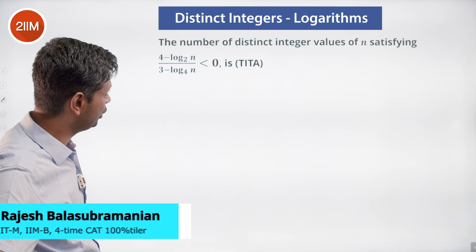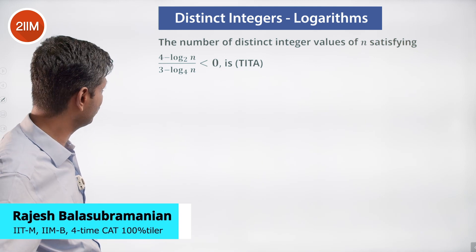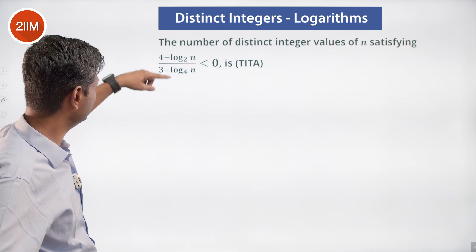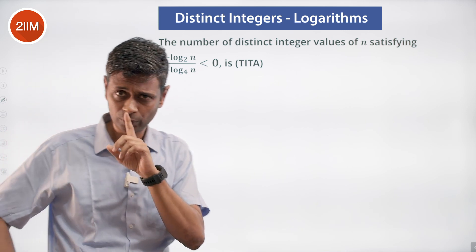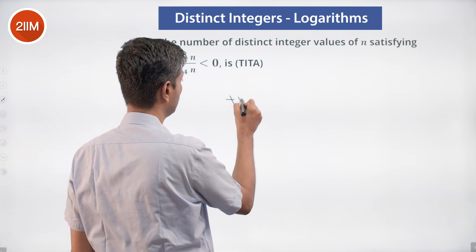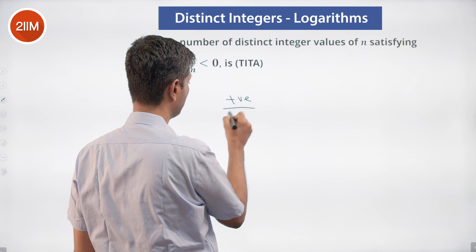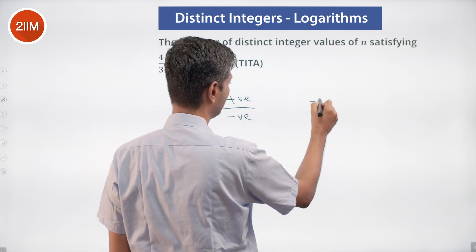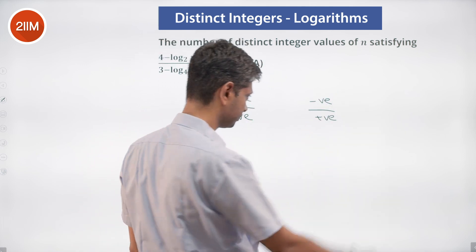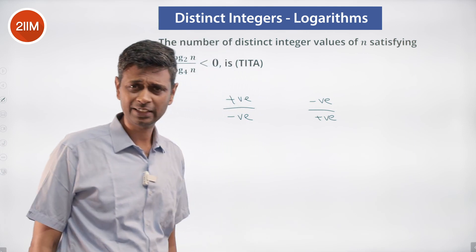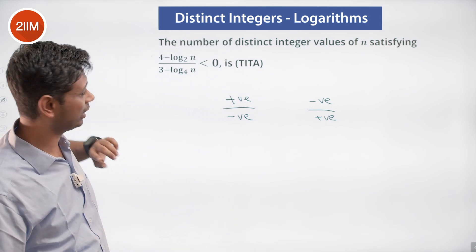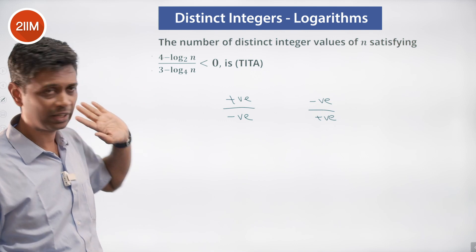The number of distinct integer values of n satisfying this expression less than zero means you could have a scenario where it is positive divided by negative, or negative divided by positive. So I'm going to think about when does the numerator become positive and negative, and when does the denominator become positive and negative.